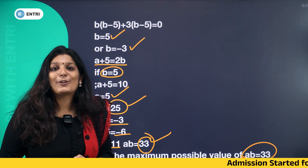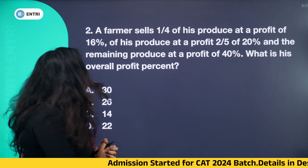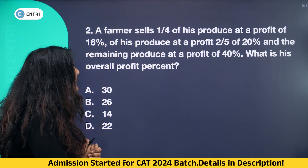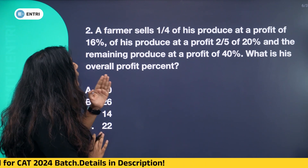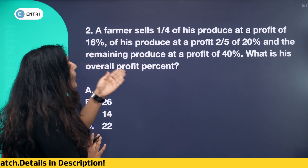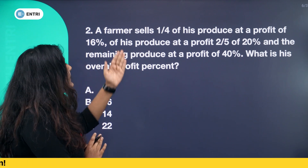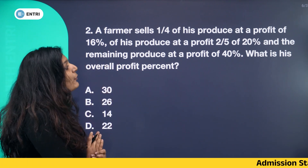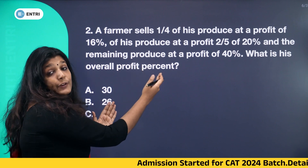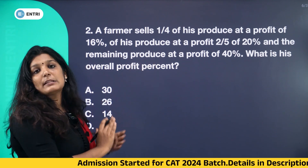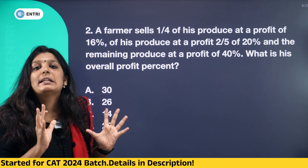Let's go to question number 2. A farmer sells 1/4 of his produce at a profit of 16%, 2/5 of his produce at a profit of 20%, and the remaining produce at a profit of 40%. What is the overall profit percent? The options are 30, 26, 14, 22.